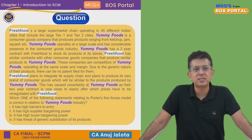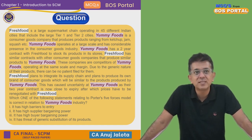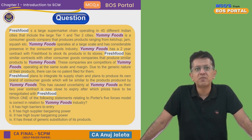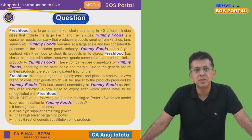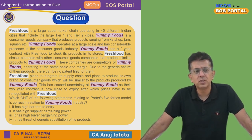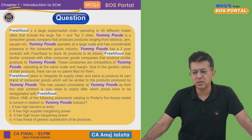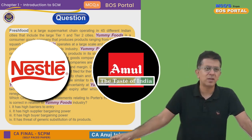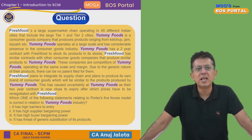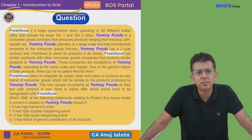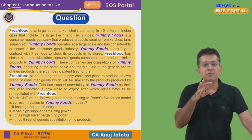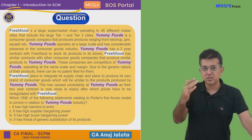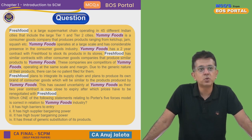The question: Fresh Foods is a large supermarket chain operating in 45 different Indian cities, including large Tier 1 and Tier 2 cities. Yummy Foods is a consumer goods company that manufactures products ranging from kitchen jam, squash, etc. — similar to a company like Amul or Nestle. Yummy Foods operates at a large scale and has considerable presence in the consumer goods industry. Let's say Yummy Foods is like Amul and Fresh Foods is like DMart — that makes it easier to discuss.